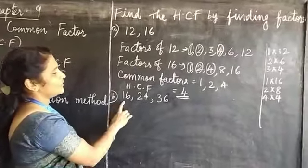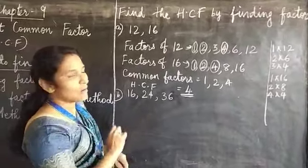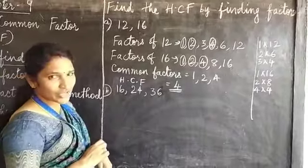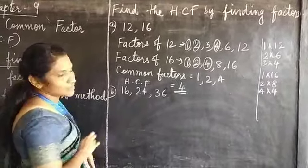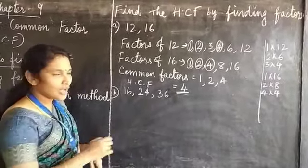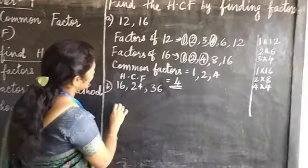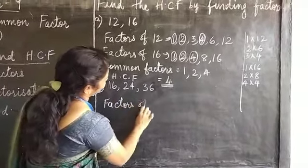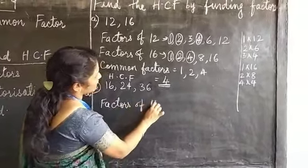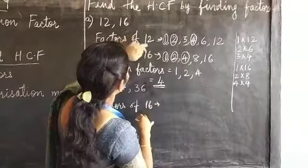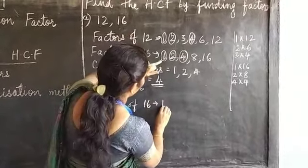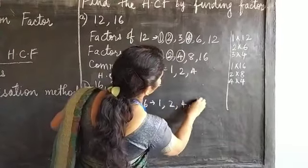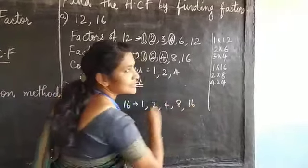Now let's do one more with three numbers. We have to find the factors of 16, 24, and 36. Factors of 16 we have already found: 1, 2, 4, 8 and 16.